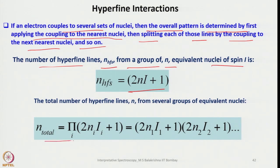N_total is obtained as shown. I have some examples I will show you later. For example, if you have more than one type of nuclei, how they interact depends on how far they are from the electron.